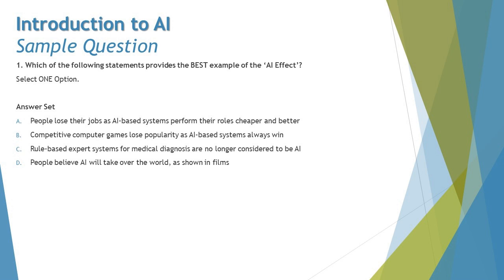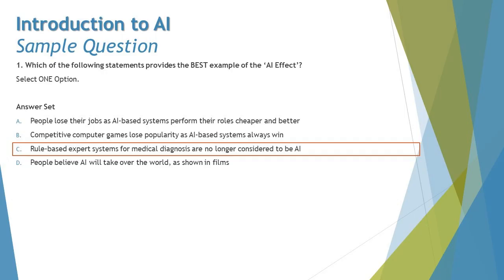Option D says people believe AI will take over the world as shown in films. Believing that a killer robot will take over the world is not what we call the AI effect. The AI effect is more about the transformation at the AI level which happens over a period of time. So the right answer is C: rule-based expert systems for medical diagnosis are no longer considered to be AI.